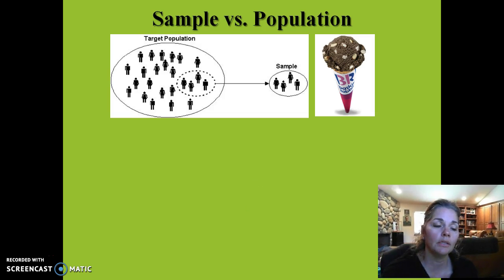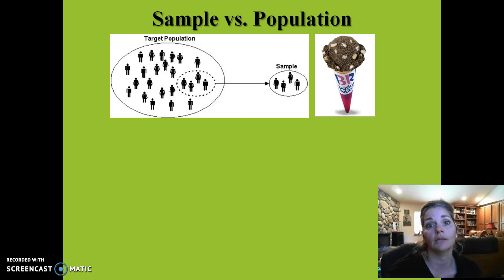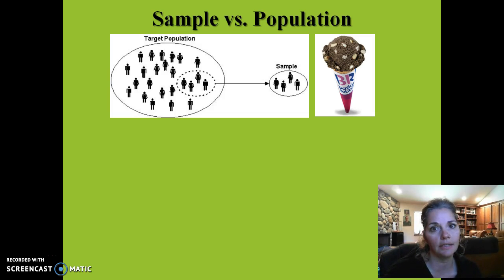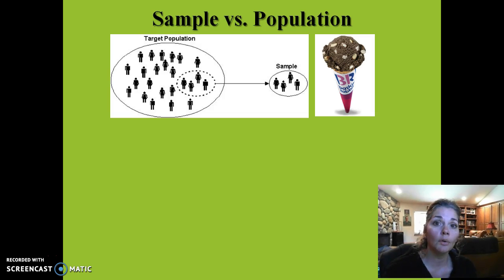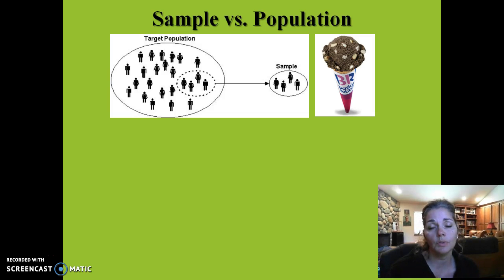Another issue that might affect our ability to gain accurate information is the concept of a representative sample. I want to talk about the difference between a sample and a population. A population is the whole group of people you're interested in studying. If I wanted to look at aggression in children, that's every child in the world — maybe narrowed to the United States, or California, or even Riverside County. It's still a huge amount of people, and it's impractical to collect data from all of them. So what we need to do in research is take a sample.